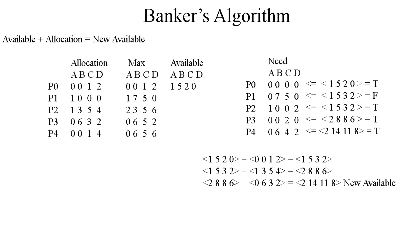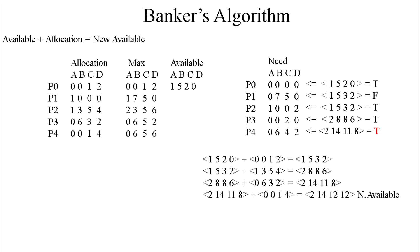So we repeat the step again by moving 2, 14, 11, 8 back down and grabbing 0, 0, 1, 4 from the allocation matrix P4, adding them to get our new available of 2, 14, 12, 12. Now we take that new available and go back to P1 to see if we can now accommodate that request. If 0, 7, 5, 0 is less than or equal to 2, 14, 12, 12 — which is obviously true — we can go ahead and accommodate that request.